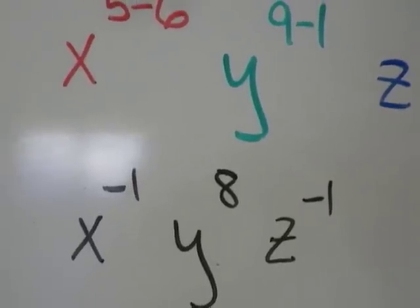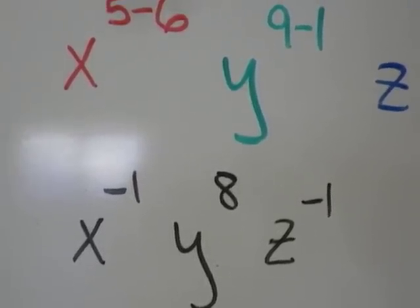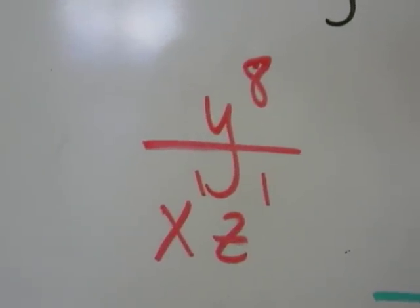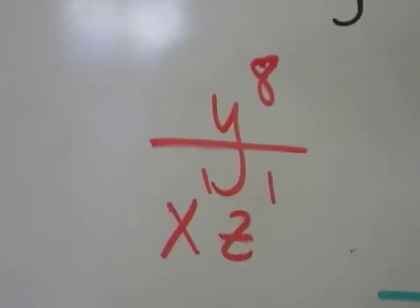What do we need to do with the negative exponents? Oh yeah, move them downstairs. So I have y to the 8th, over x to the 1st, and z to the 1st.